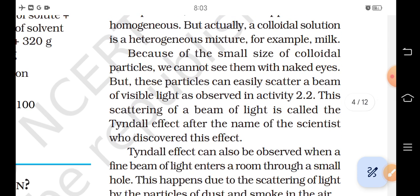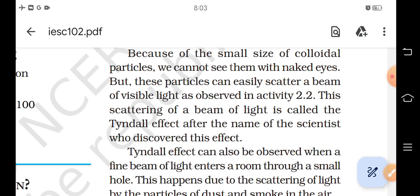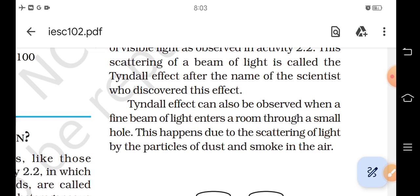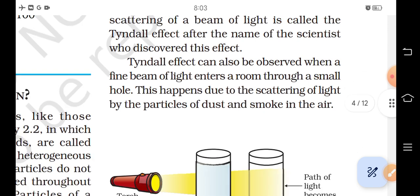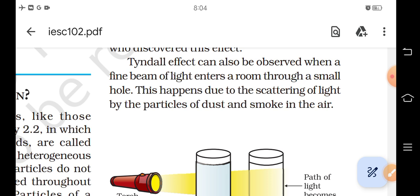Because of the small size of colloidal particles, we cannot see them with naked eyes. But these particles can easily scatter a beam of visible light as observed in activity 2.2. This scattering of a beam of light is called the Tyndall effect after the name of the scientist who discovered this effect. Tyndall effect can also be observed when a fine beam of light enters a room through a small hole. This happens due to the scattering of light by the particles of dust and smoke in the air.